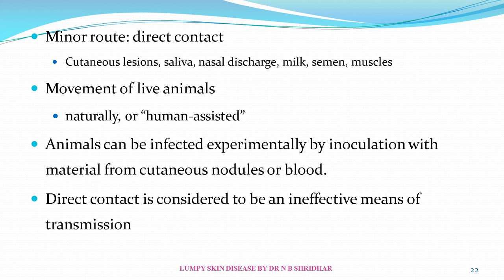Minor routes of transmission include cutaneous lesions, saliva, nasal discharge, milk, semen, and muscles. Movement of animals — natural or human-assisted — can transmit disease from one place to another. Animals can be infected experimentally by inoculation with material from cutaneous nodules or blood. Direct contact is considered to be an ineffective means of transmission.